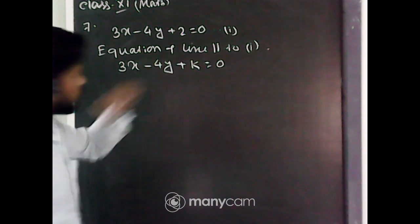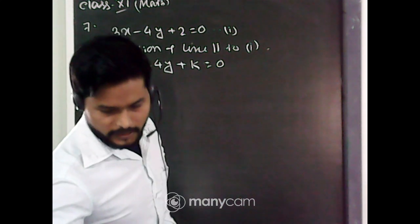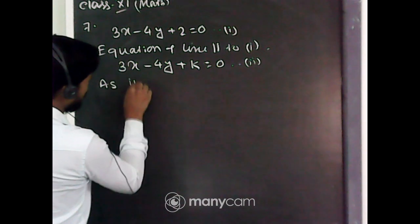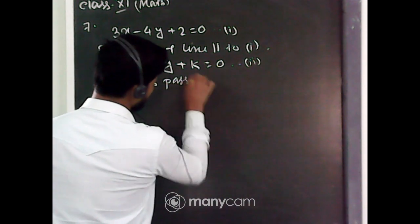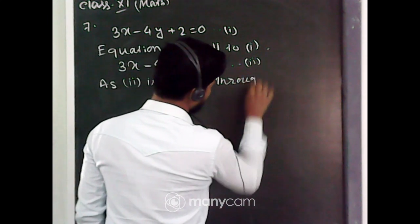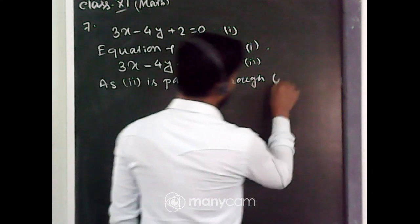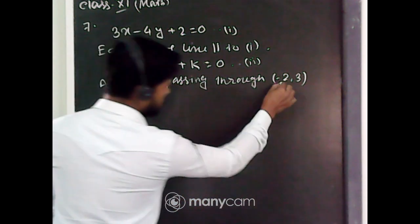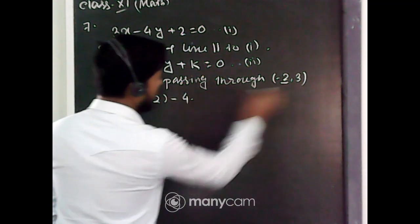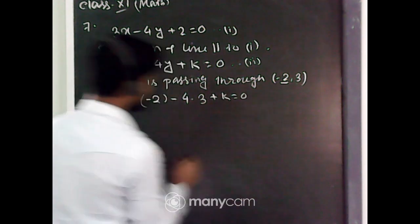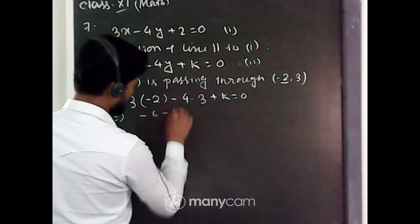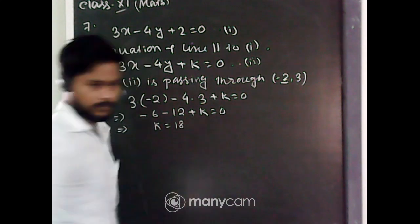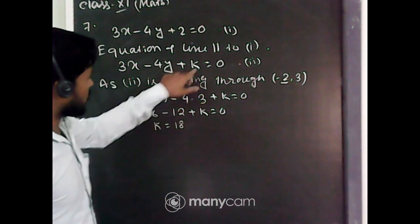This line is passing through the point (-2, 3), so equation two must be satisfied by this point. Substituting: 3(-2) - 4(3) + k = 0, which gives -6 - 12 + k = 0, so k = 18.